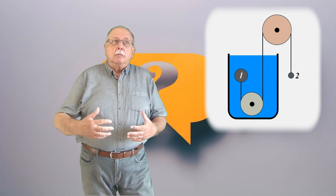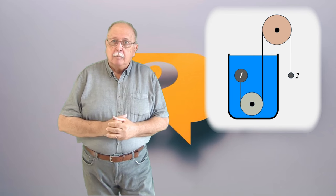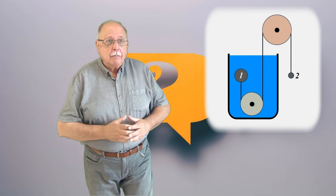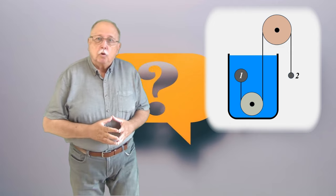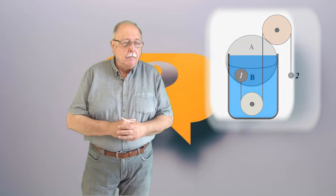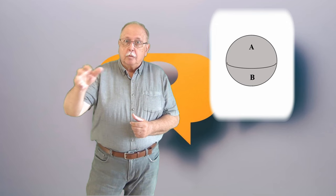De pildă în apă, cu cât suntem mai adânc, cu atât mai mult fluid apasă asupra noastră și mai mare devine presiunea. Și asta înseamnă că dacă ne gândim, de pildă, la un corp de formă sferică, presiunea medie pe jumătatea de jos este mai mare decât presiunea medie pe jumătatea de sus.